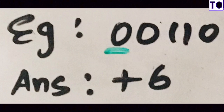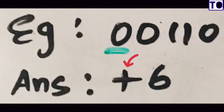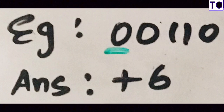This is a signed number in signed magnitude form. The answer is positive 6. If you have 0 as a sign bit, that means plus. So you have plus, then 0, 1, 1, 0, which is the binary representation of 6. That's why the answer is plus 6.